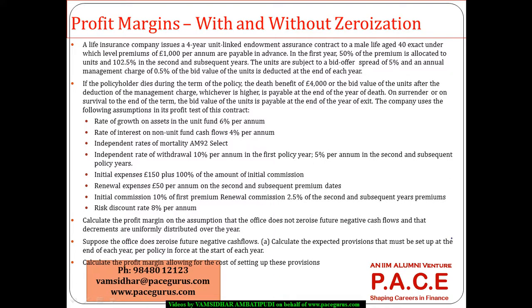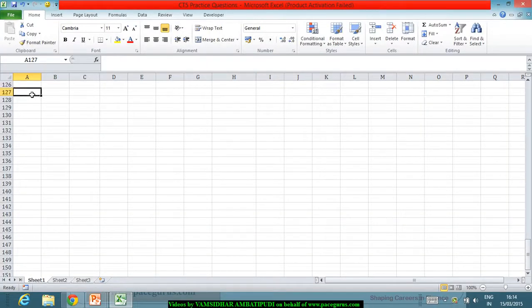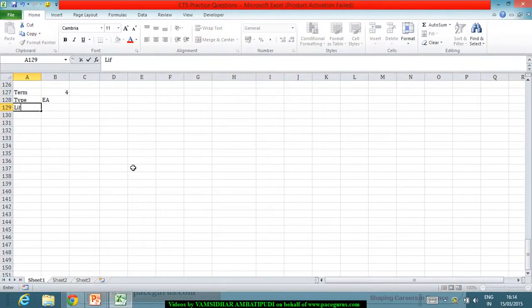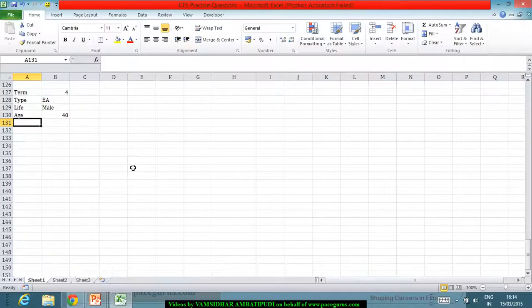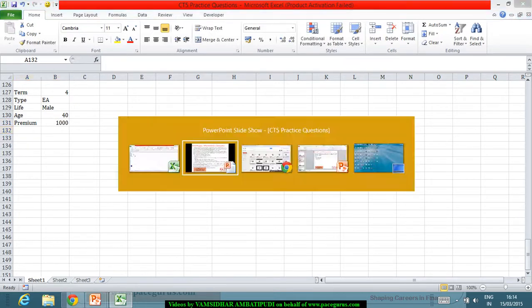Let's look at this numerical which helps us in doing the profit margin for a unit linked endowment assurance contract. A life insurance company issues a four year unit linked endowment assurance. The term period is four years, the type of the policy is endowment assurance, and the life is male aged 40 years exact. Level premiums of 1000 per annum are payable in advance.